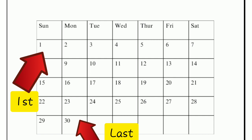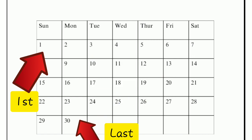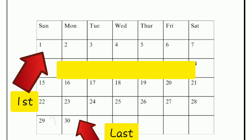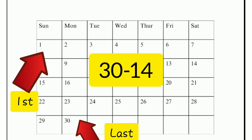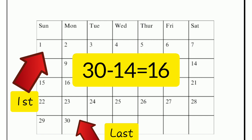To get the ovulation date of a 30-day cycle, you need to get the length of your cycle, which is 30. Remember that the luteal phase is usually a constant — it is usually 14 days. So take your 30 days and do 30 minus 14, and you're going to get 16.